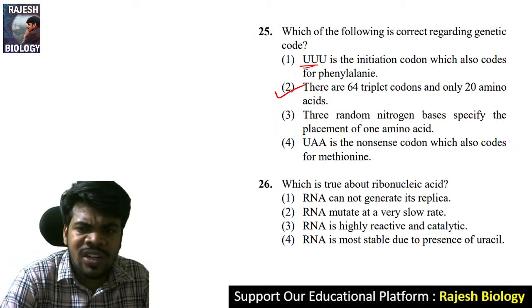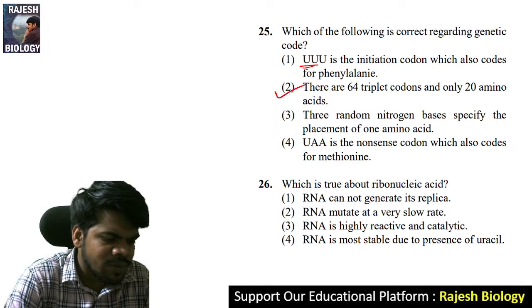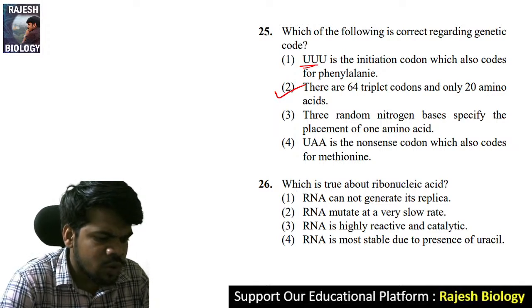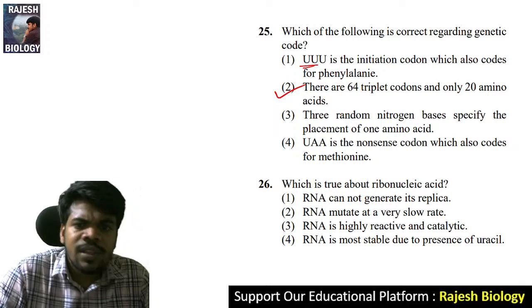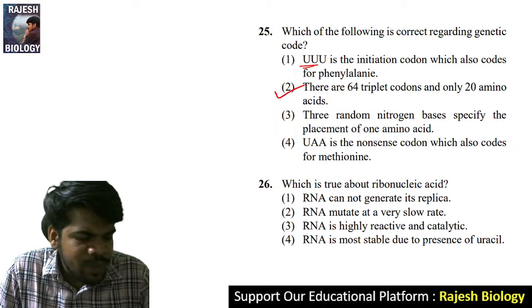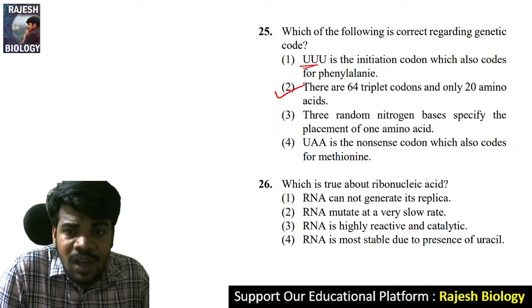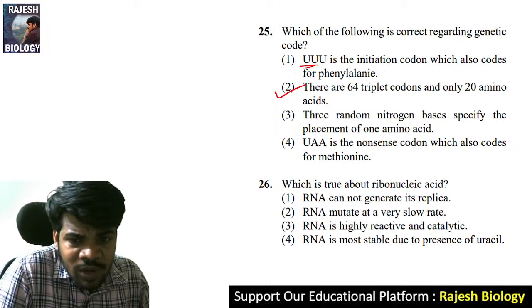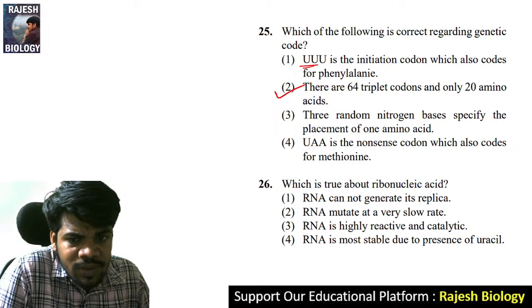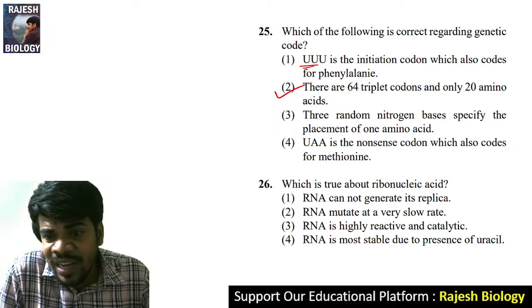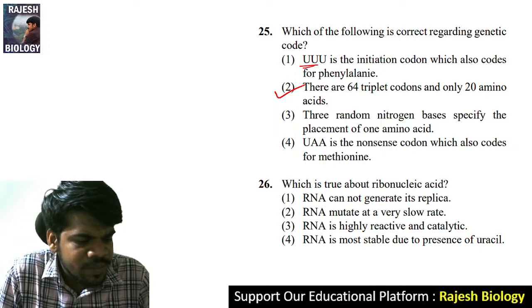Question 26: which is true about ribonucleic acid? RNA cannot generate its replica — that is correct. RNA mutates at a very slow rate. RNA is highly reactive and catalytic. RNA is more stable due to the presence of uracil.